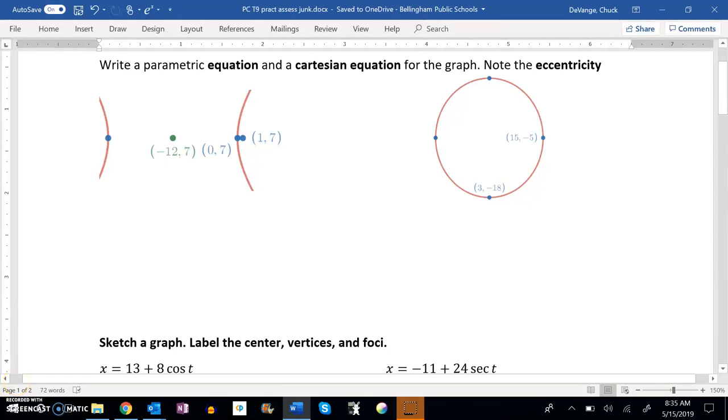So this is pre-calculus, and this is the practice assessment for topic 9, and we're supposed to write a parametric equation and a Cartesian equation for each of these graphs, and we're also supposed to note the eccentricity. Notice I've got three things to do here.